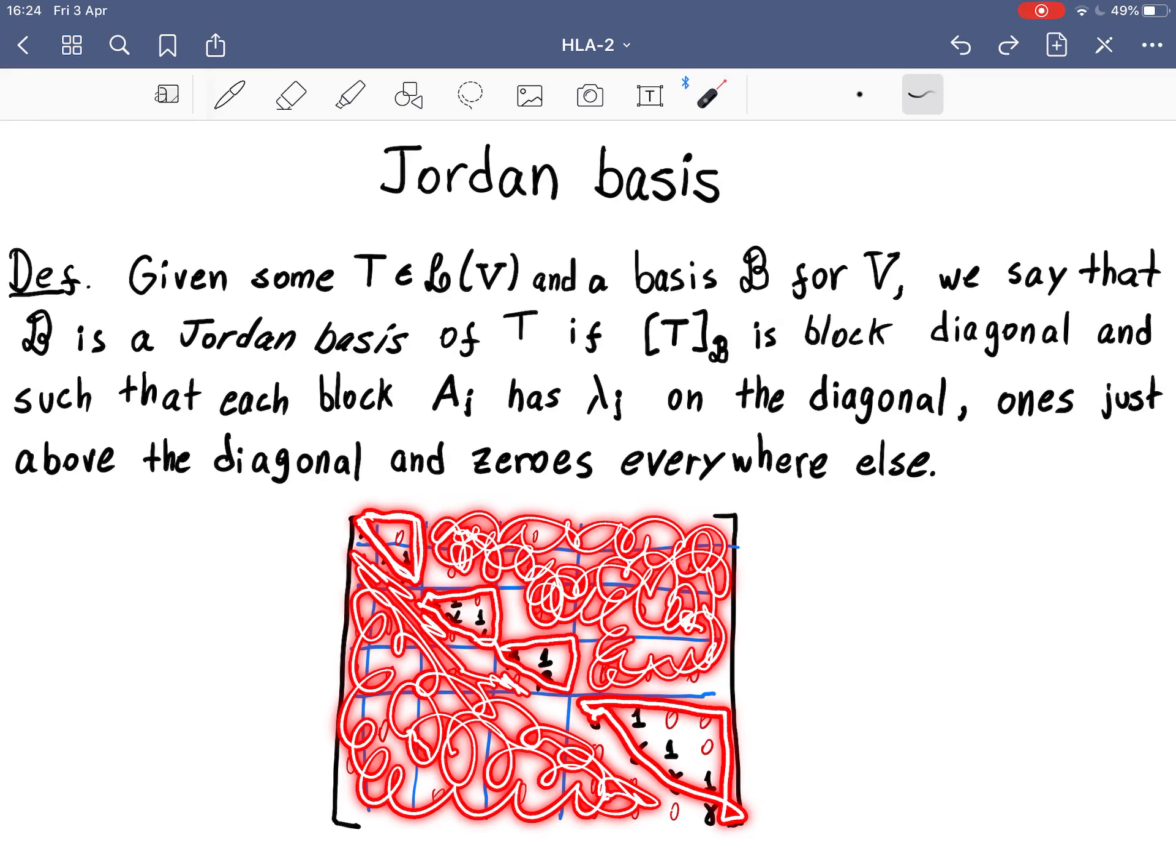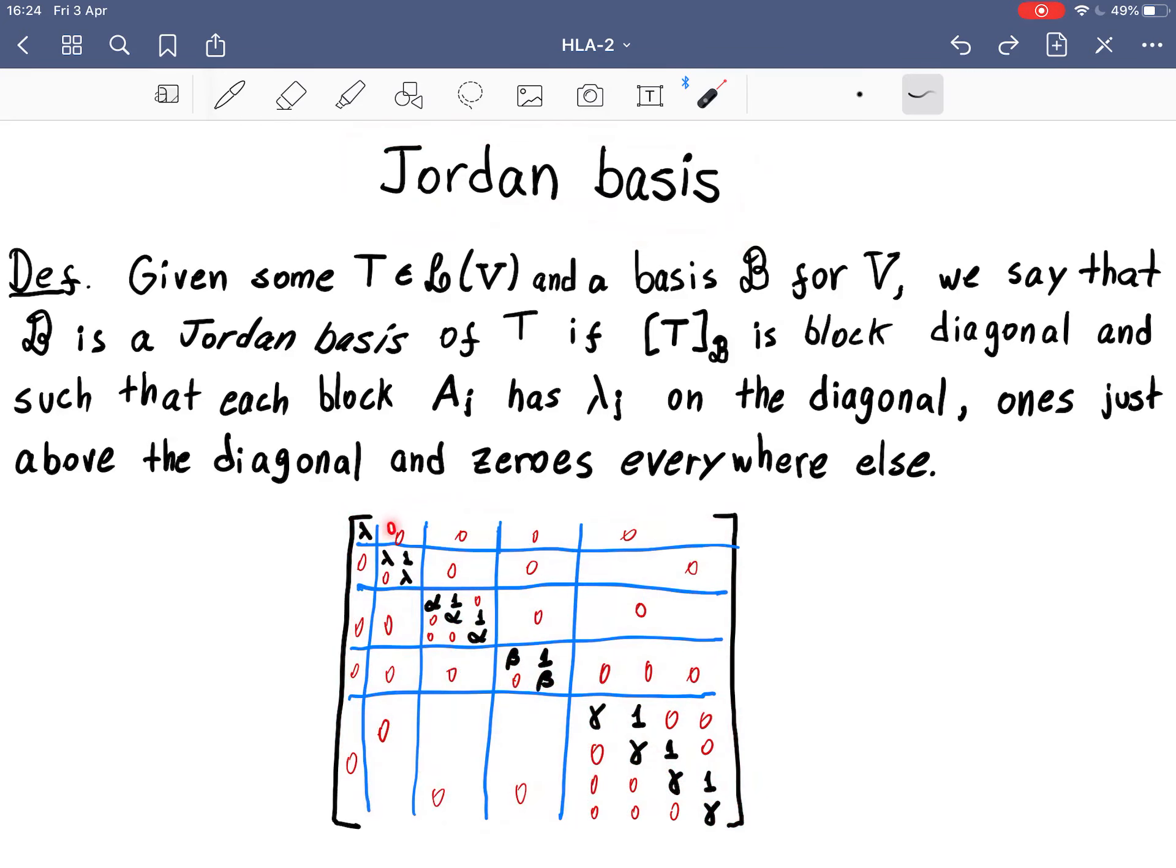And now, what Jordan Basis introduces is a basis for which not only you have all these zeros, but now you also get zeros here, here, and here. So you got so many zeros that it became simpler to say where are the non-zero elements of this matrix.